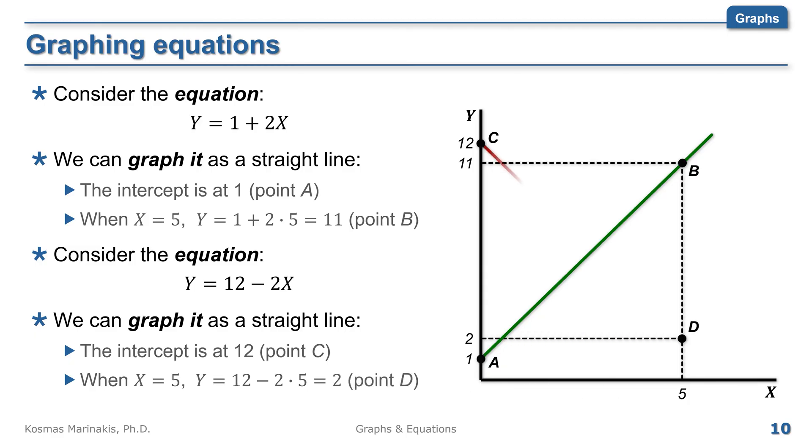So connecting points C and D reveals a new line with a negative slope now as you should have expected by looking at this equation.